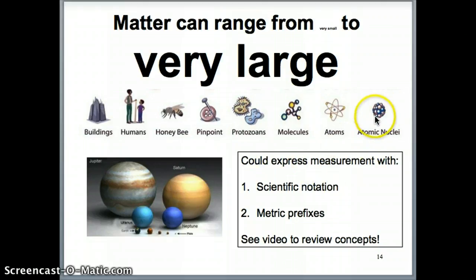So similarly with things that are very small, we don't want to write 0.0000001 for something that's really small, for the same reason as for things that are really big. So what we do is we try to express these types of measurements with two different ways that basically simplify the presentation.